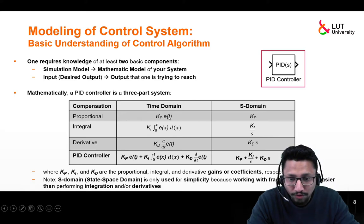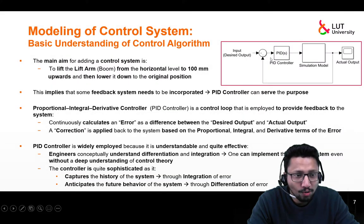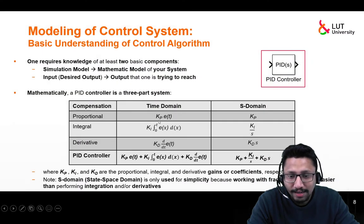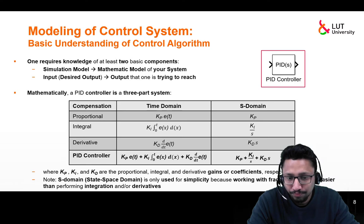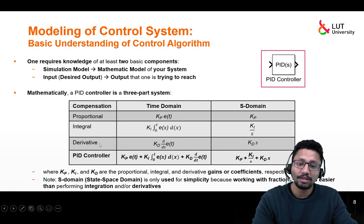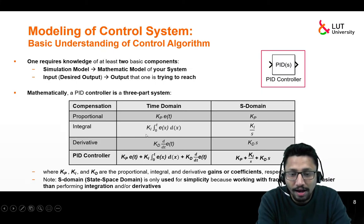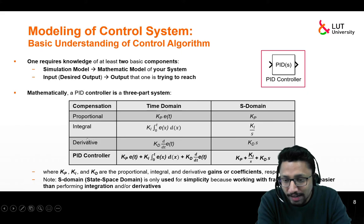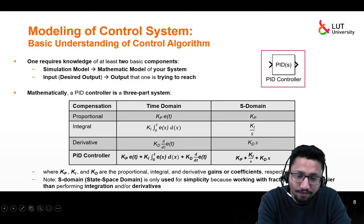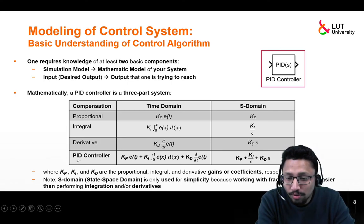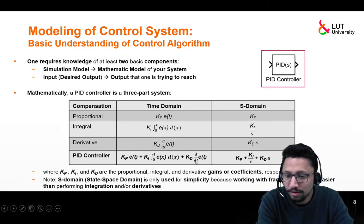The proportional compensation is directly proportional to the error of the system — desired output minus actual output — with kp as the proportional gain. The integral compensation is directly proportional to the integral of the error, with ki as the integral gain. The derivative compensation is directly proportional to the derivative of the error, with kd as the derivative gain. The output of the PID controller is the sum of all three compensations.